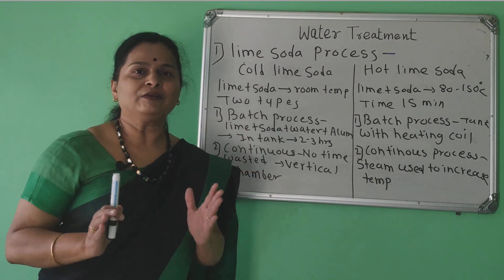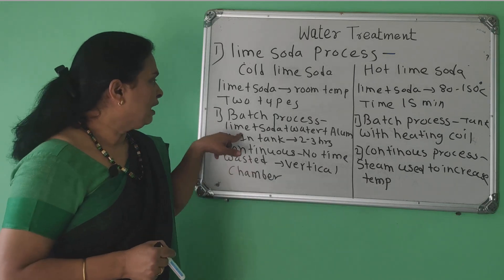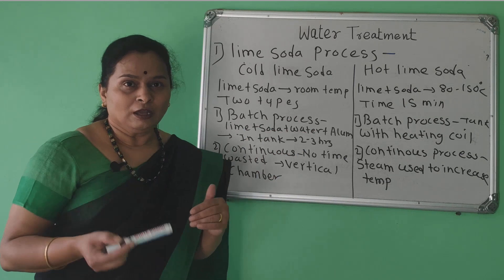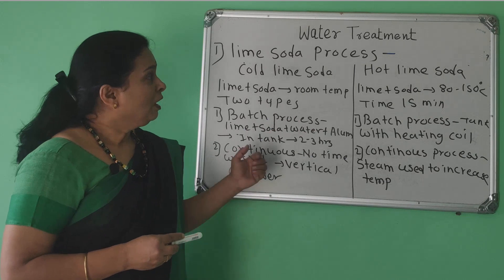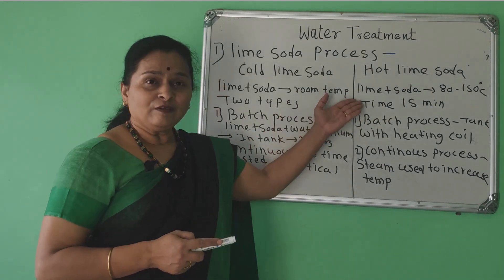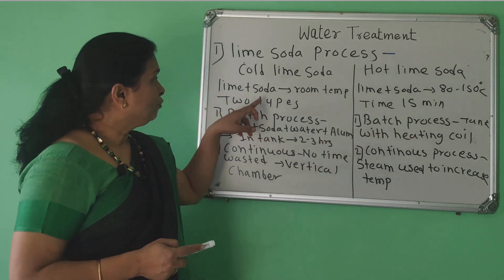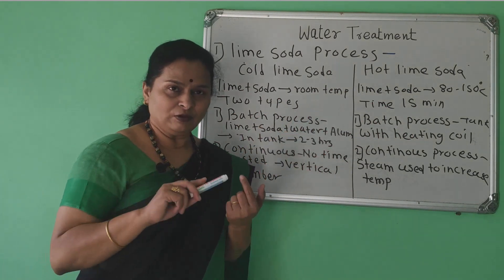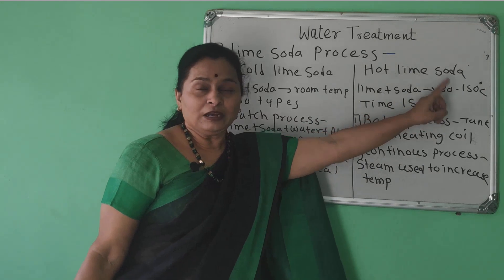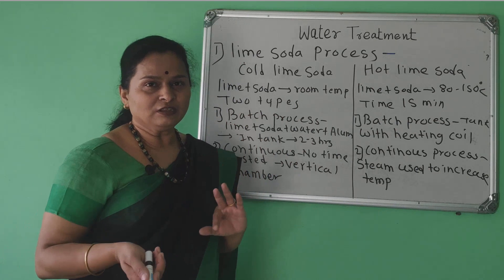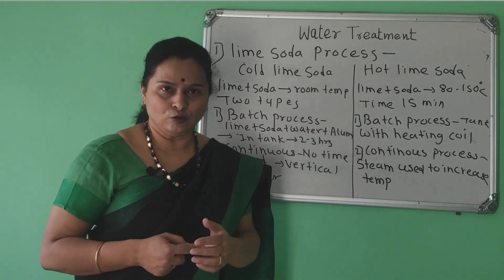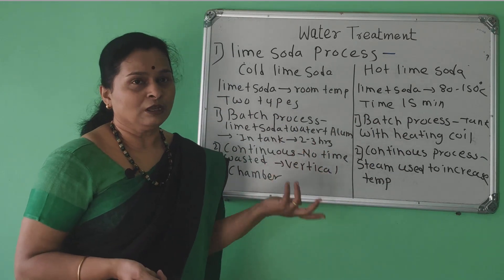In the continuous process, a cylindrical vessel is used. Lime, soda, water, and alum are added from one side, and soft water is obtained from the other side. No time is wasted in the continuous process. In the hot lime soda process, lime water is added to hard water at 80 to 150 degrees Celsius. The time required for the hot lime soda process is 15 minutes, compared to 2 to 3 hours for cold lime soda. In the batch process a tank with heating coils is used to raise temperature to 80–150°C, while in the continuous process steam is used to increase the water temperature.